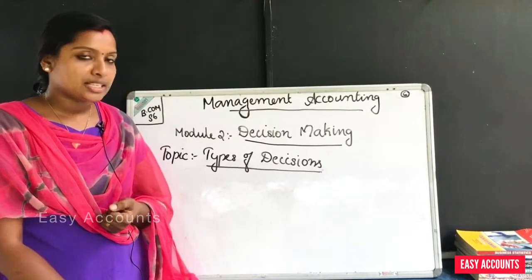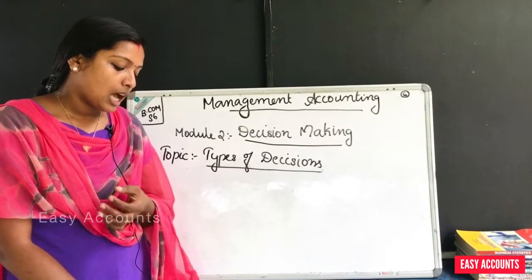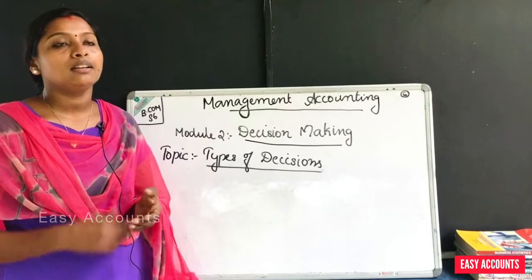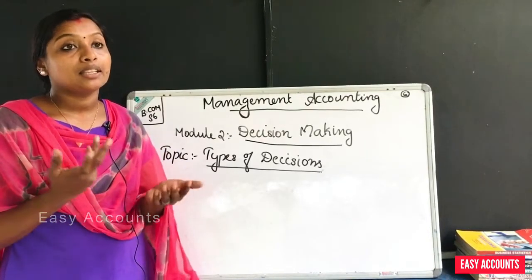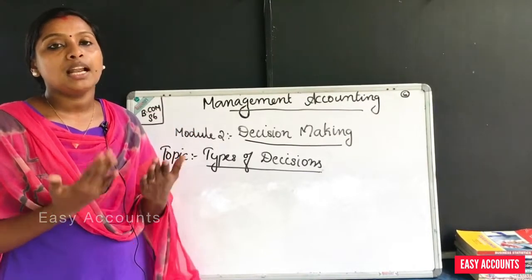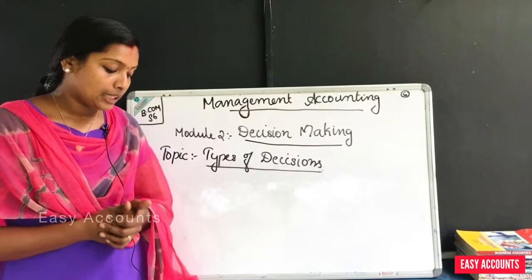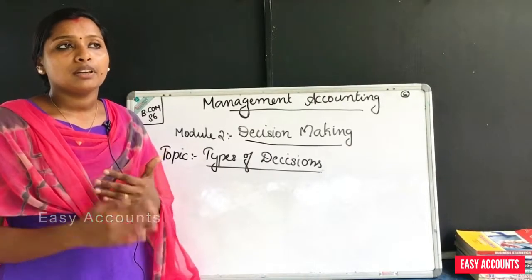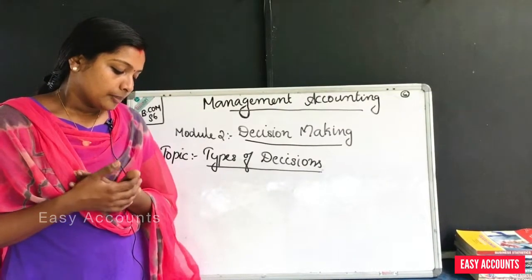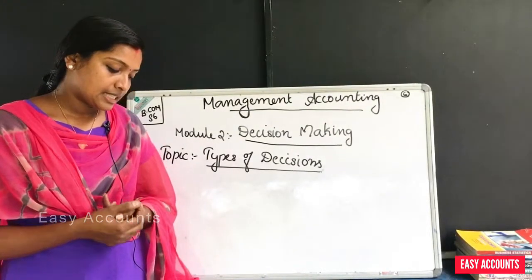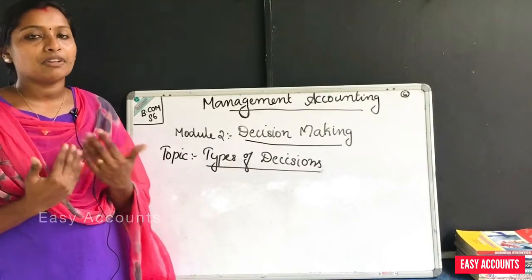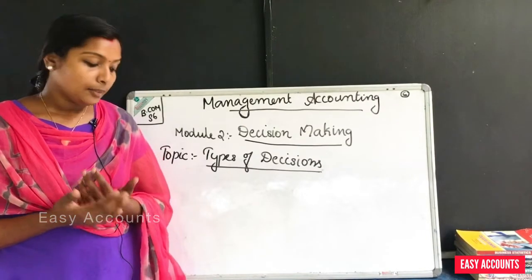Routine and strategic decisions: routine decisions are taken to carry out day-to-day operations and are generally made at a lower level of management. For example, provision of recreational facilities, air conditioning, better lighting, etc. We call these routine decisions.